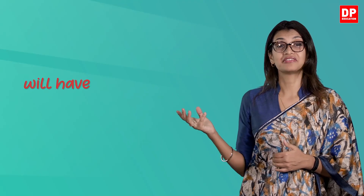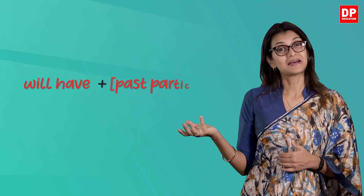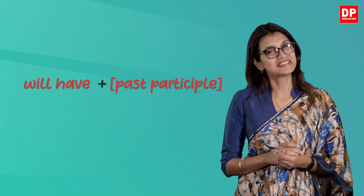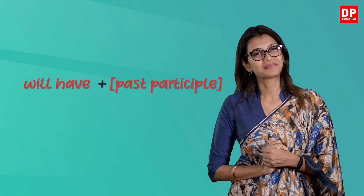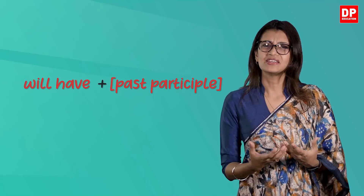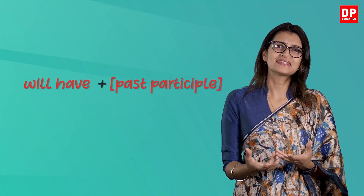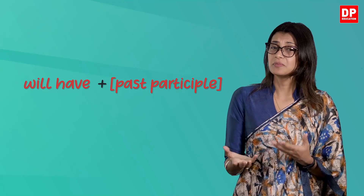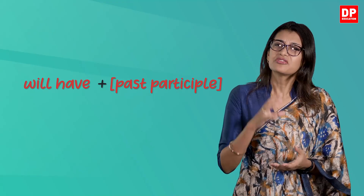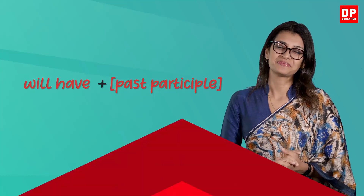Let's now look at the formula for the future perfect tense. The formula is simple: will have plus past participle. It doesn't matter if the subject of your sentence is singular or plural — the formula doesn't change.